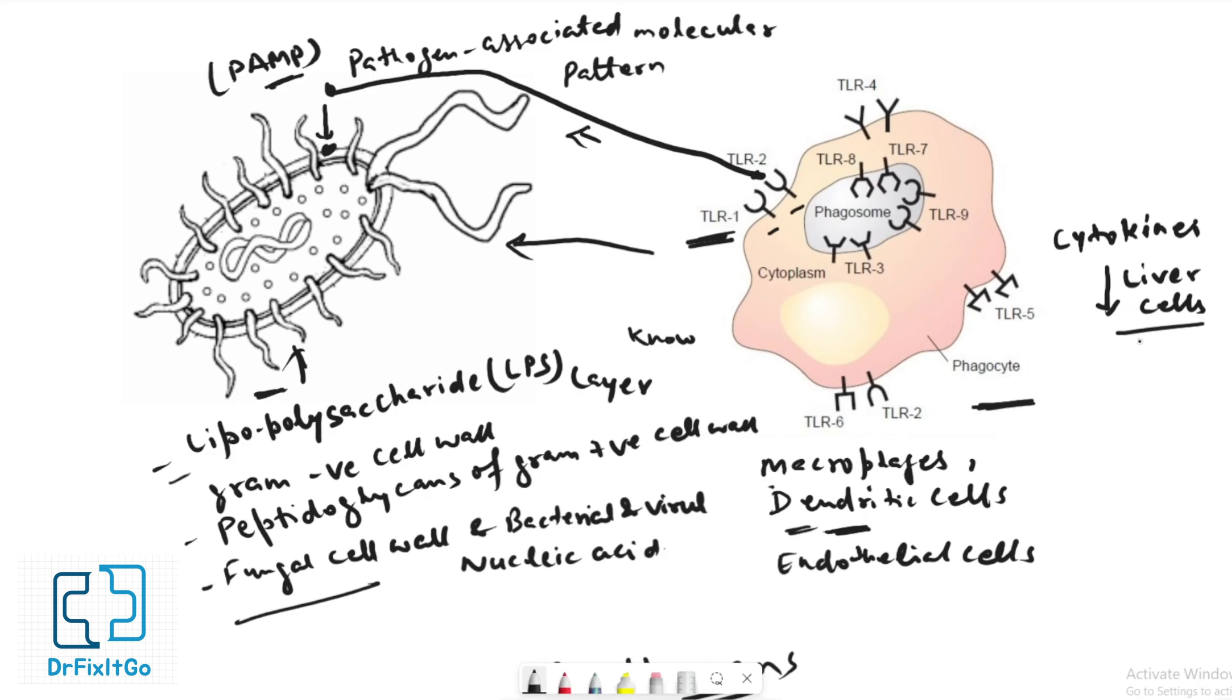Some cytokines stimulate liver cells to synthesize and secrete defensive blood proteins called acute phase proteins, which elevate inflammation and activate the lectin pathway of the complement cascade. TLR activation to PAMPs in macrophages and dendritic cells also induces these cells to differentiate into cells active in the acquired immune response.